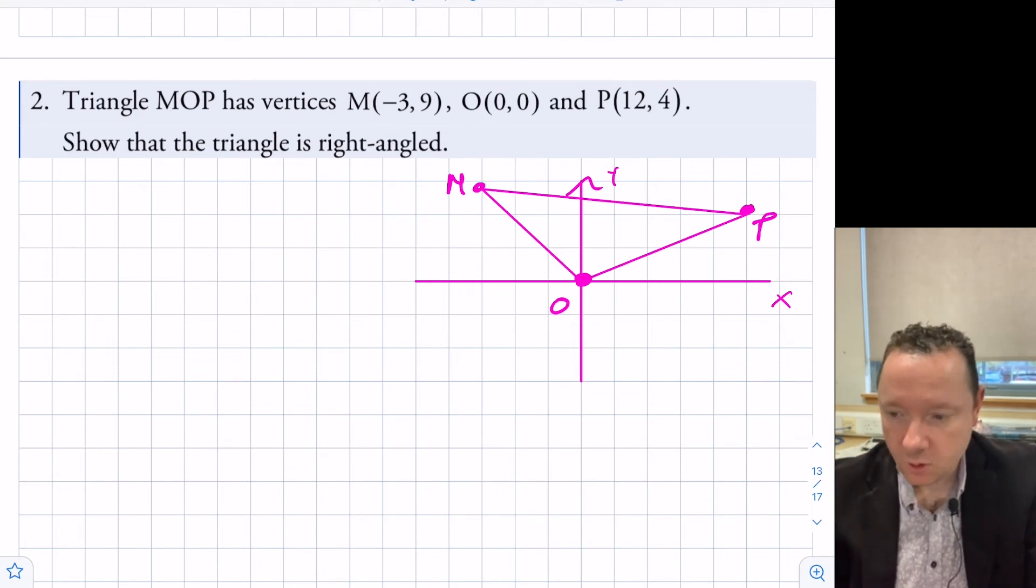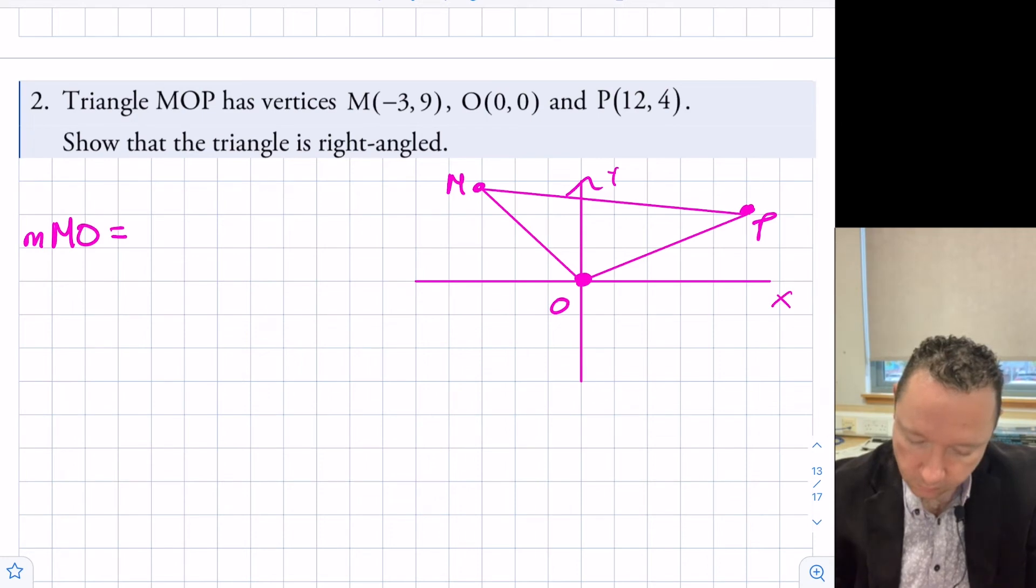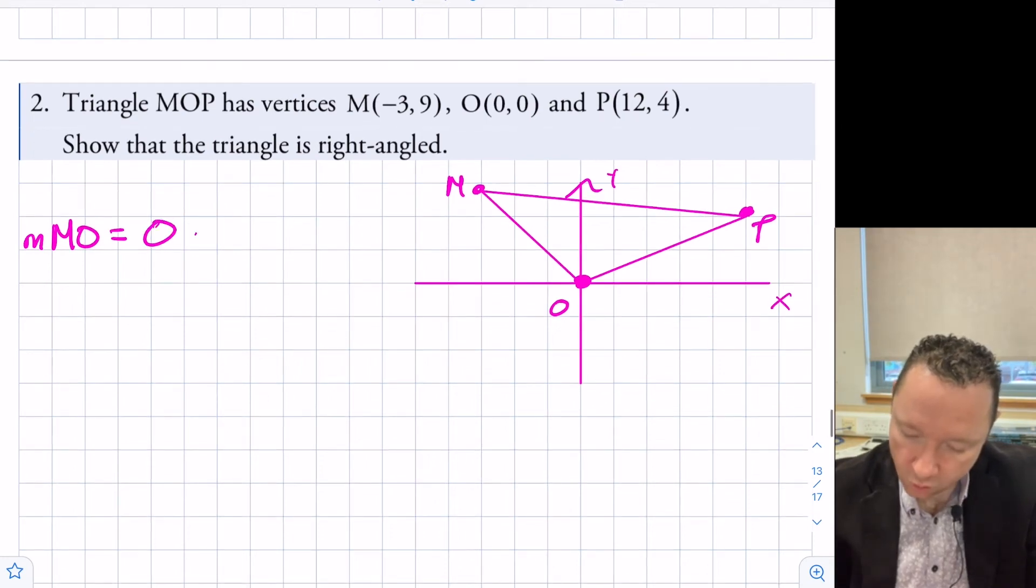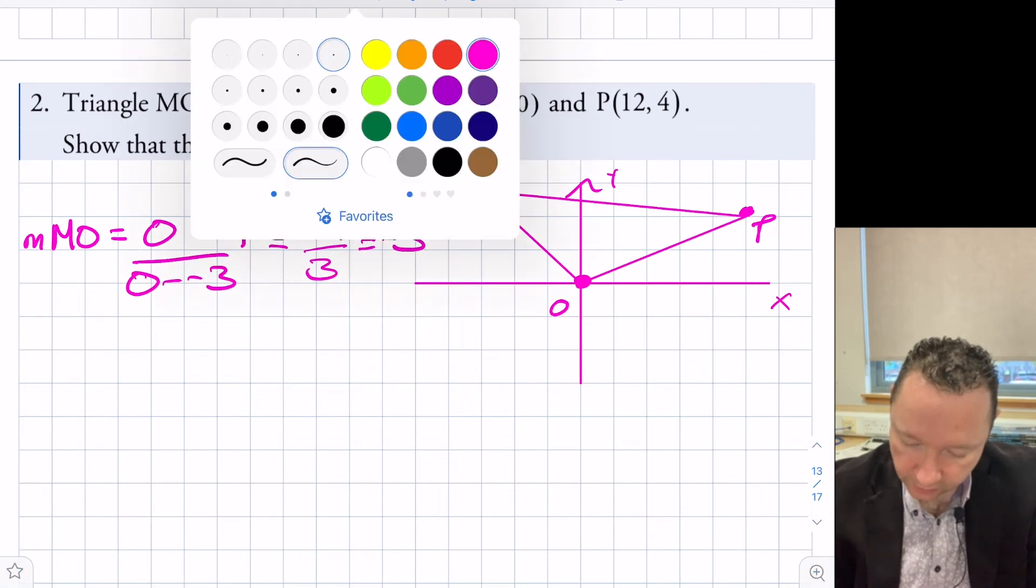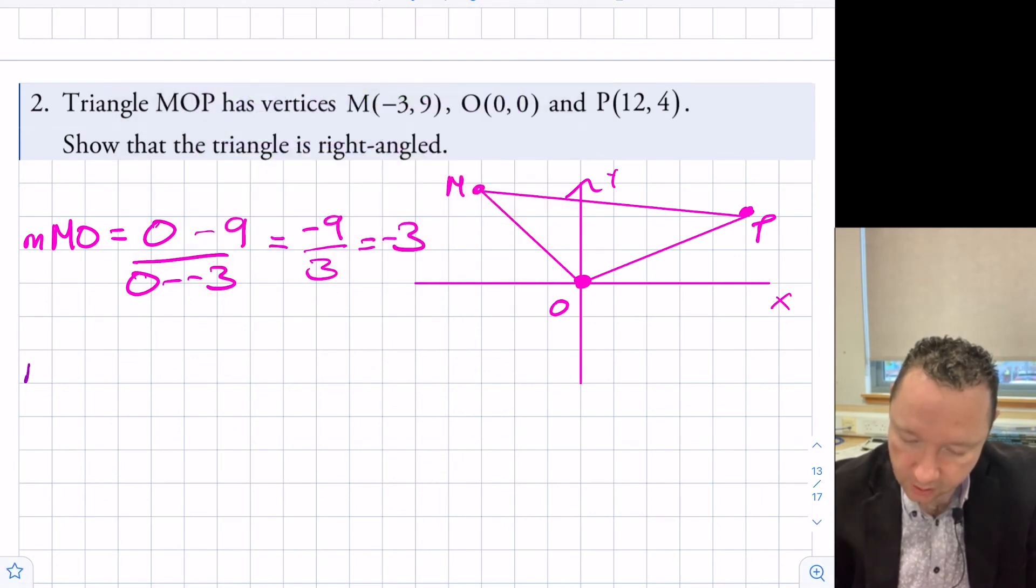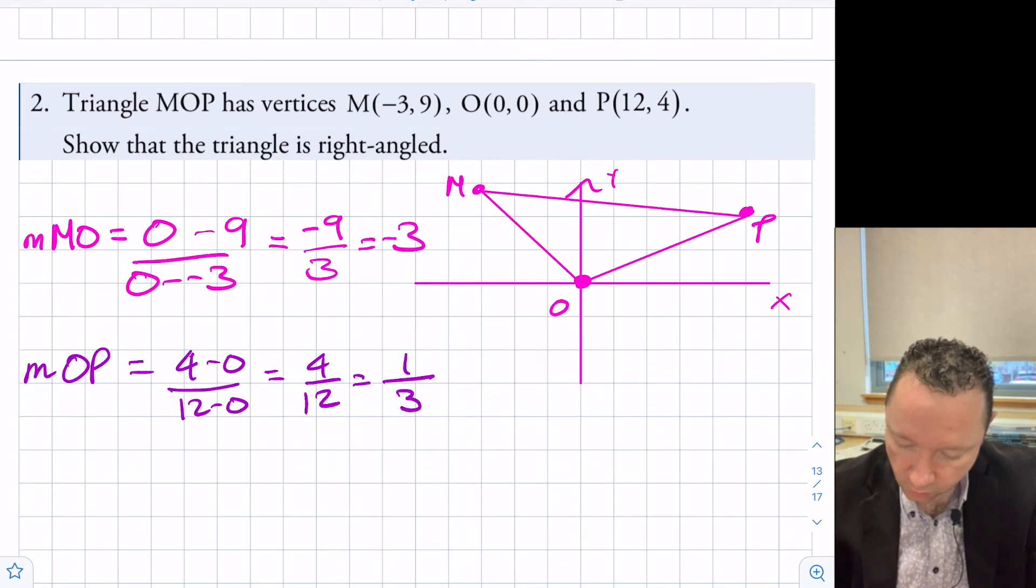So let's check the gradient of MO. Gradient of MO is 0 minus 9 over 0 minus -3. That's -9 over 3, which is -3. So we've got our first gradient. Let's check the gradient now of OP. O to P, that's going to be 4 minus 0 over 12 minus 0. That's 4/12. We simplify that to 1/3.